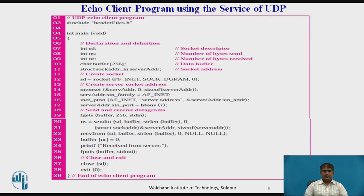Here you can see the client program and the echo-client process. The client sends only one datagram to be echoed by the server. Line 12 creates a socket. Lines 14 to 17 show how to create the server socket address — there is no need to create the client socket address here. Lines 19 to 25 read a string from the keyboard, send it to the server, and receive it back. Line 23 adds a null character to the received string to make it printable in line 25. In line 27, we close the socket.